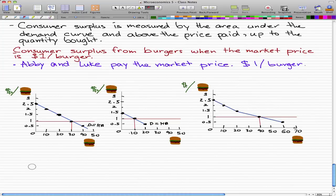Abby and Luke pay the market price, which is $1 a burger. The value Abby places on the 10th burger is $2.